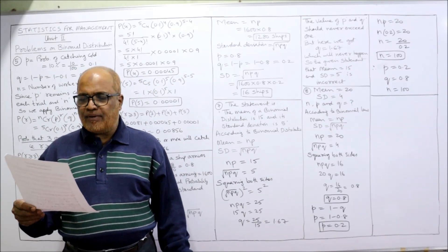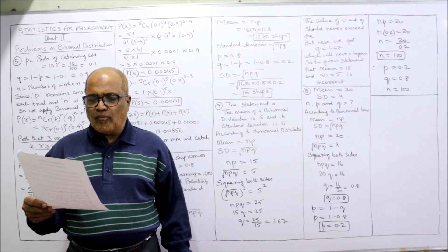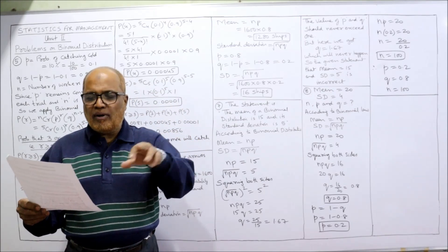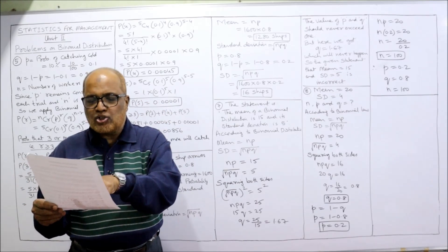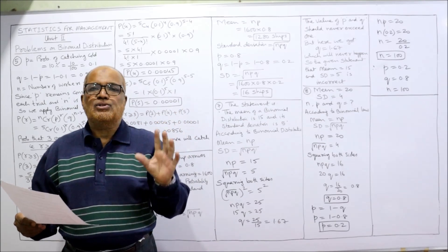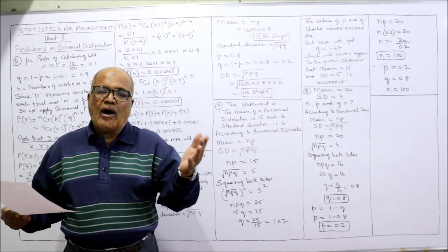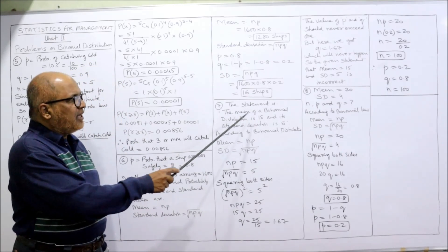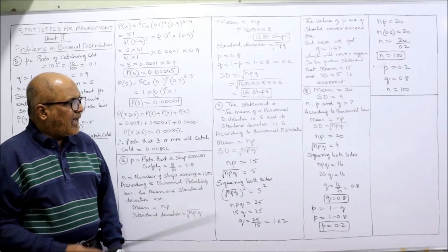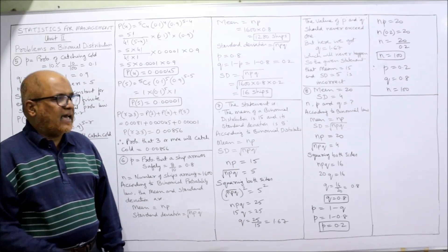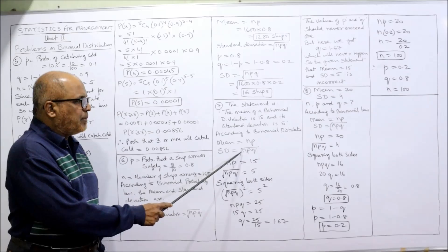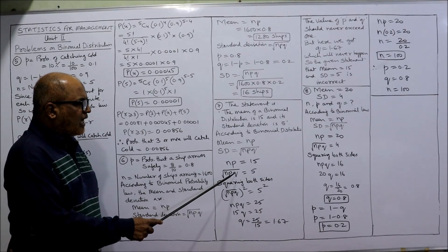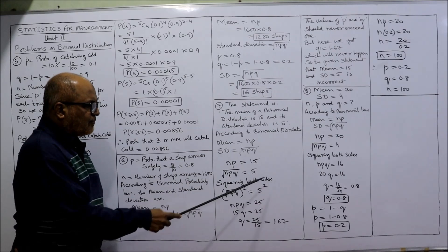Problem number seven: Examine the validity of the following statement — the mean of a binomial distribution is 15 and its standard deviation is 5. We must determine if this is true or false. According to binomial distribution, mean = NP and standard deviation = √(NPQ). From the statement, NP = 15 and √(NPQ) = 5.